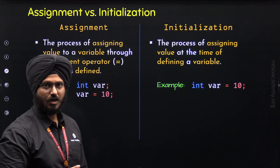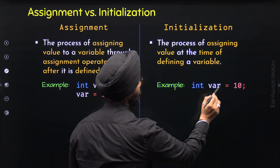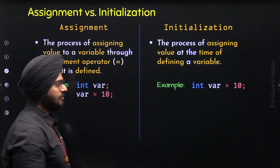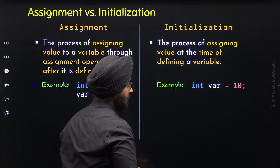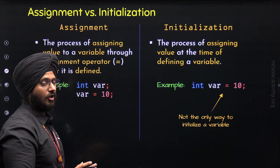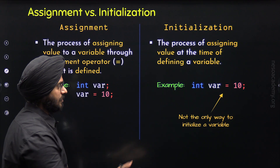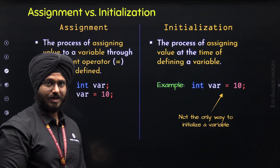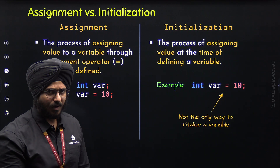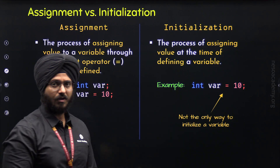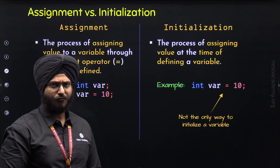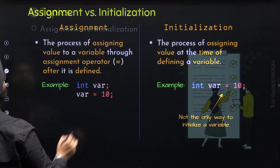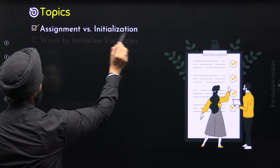This way of Initialization is inherited from C Programming Language. In C, this is how we initialize a variable. But in C++, this is not the only way to initialize a variable. Although this type of initialization is inherited from C and is the only way in C, in C++ there are other ways as well. We are done with the first topic, Assignment vs. Initialization.